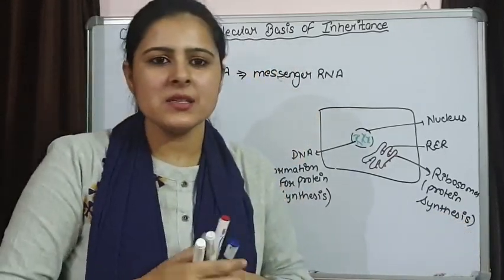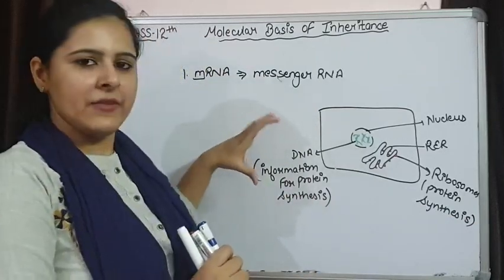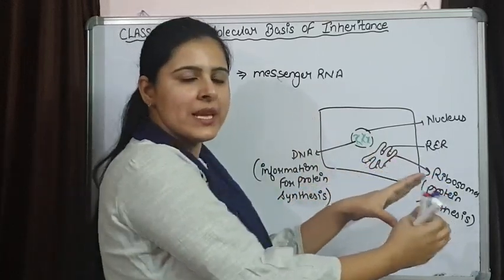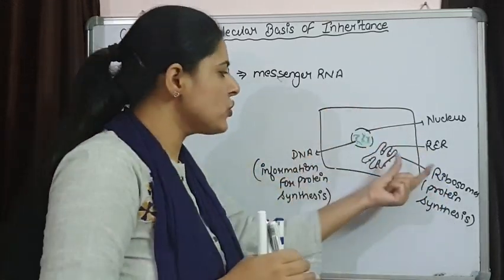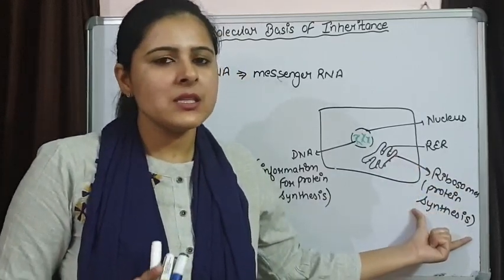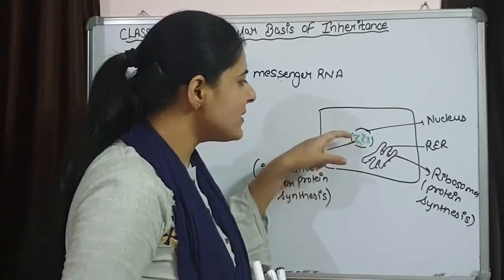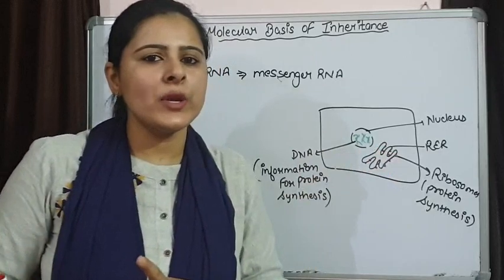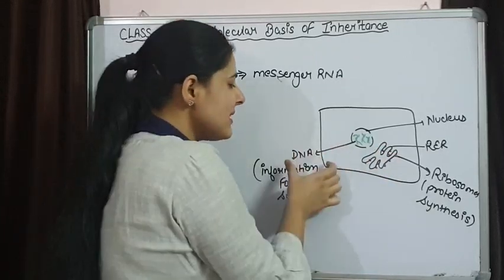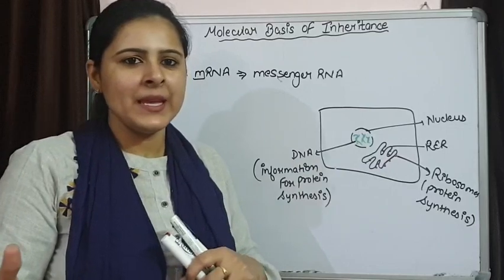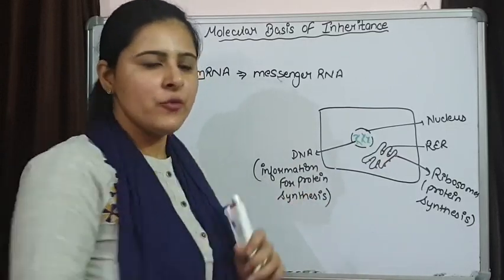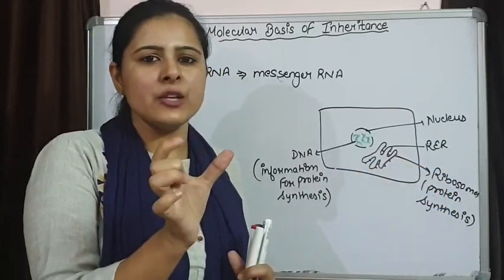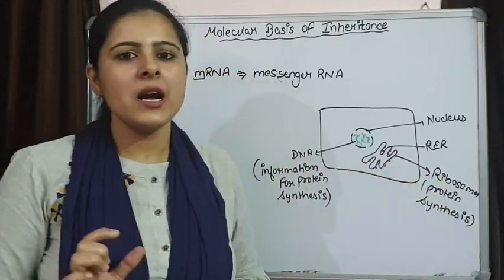So how is protein synthesis going to take place? The DNA is having the information for protein synthesis. This information will be supplied to ribosomes and then by using this information ribosomes are going to synthesize proteins. But the DNA is not going to exit the nucleus — DNA is not going to come out. That means this DNA is going to send a messenger that is going to carry information for a specific protein to the ribosome, so that by utilizing that information ribosomes can synthesize a protein.